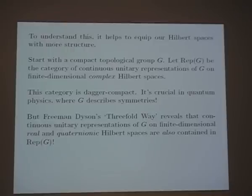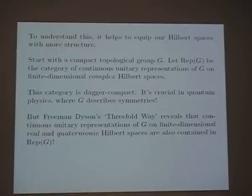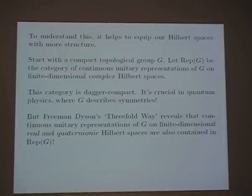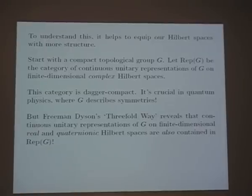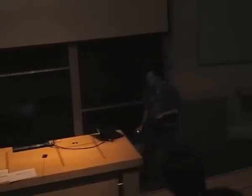The interesting thing is that the category of complex representations also contains within it the categories of real or quaternionic representations. This is an old fact — Jamie Vicary said to me last night, 'that's just the Frobenius-Schur indicator,' and yes it is. Not everyone knows about it, though, so Freeman Dyson tried to popularize it by calling it the threefold way. He wrote a very nice paper about that which not enough people have read.